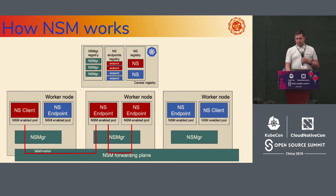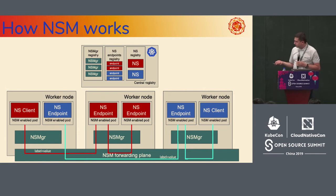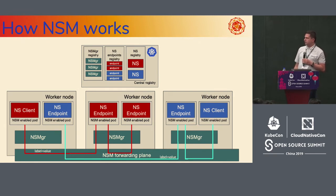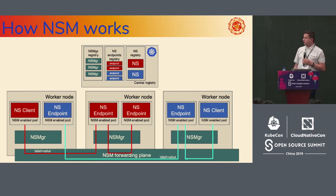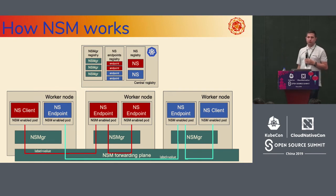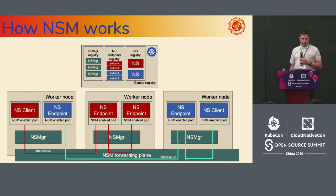The same applies for any additional services a client wants to consume. On the connection request going out of a pod, you can include labels — for example, saying 'I want to consume service version two' — and Network Service Mesh uses label matching to route you to the properly labeled endpoint.